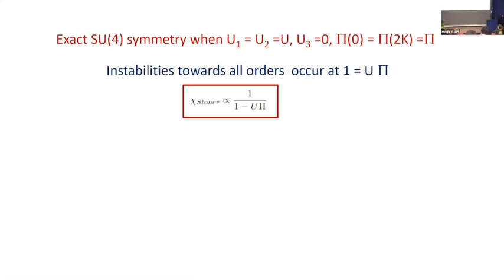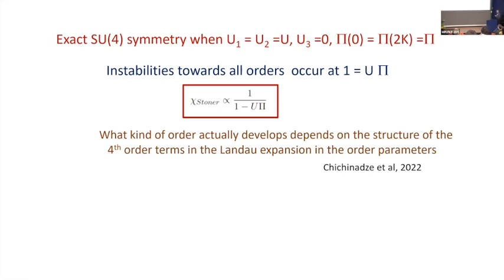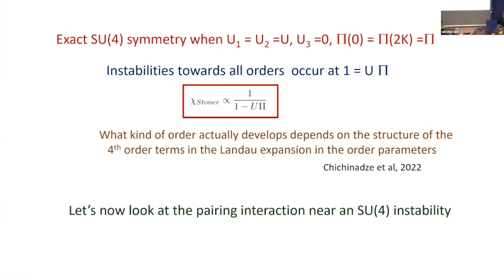What actually happens when you go beyond this point and ask what kind of order develops depends on the structure of fourth-order terms in Landau theory. I won't go into the ordered state. What I'm interested in is what kind of pairing you may have very close to this SU(4) instability. The system develops instability as I change the polarization bubble by changing density, and I want to see if I can get superconductivity close to this instability.